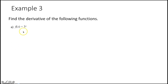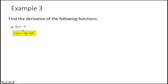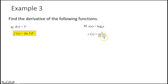Example 3: derivative of 3^x. When you have a number raised to your independent variable, it's ln of the base times the same thing: ln(3) times 3^x. For log base 4 of x, the derivative is 1 over (ln(4) times x), which we can rewrite as 1 over (x times ln(4)).